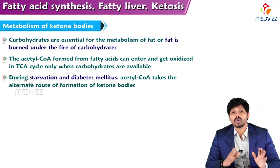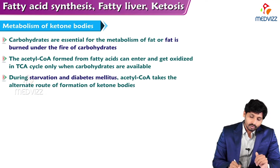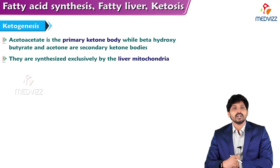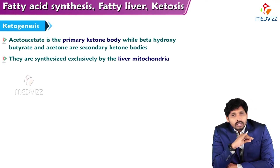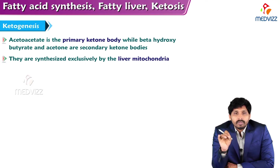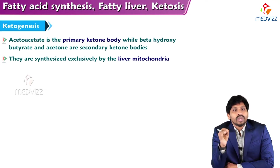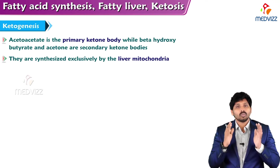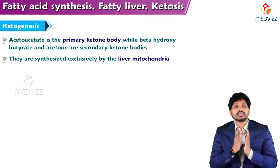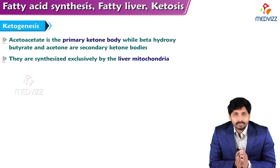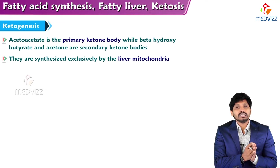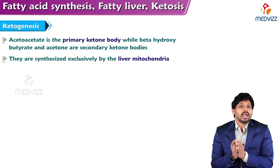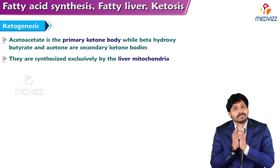During prolonged starvation and diabetes, acetyl CoA takes an alternative route for formation of ketone bodies — ketogenesis. The synthesis of ketone bodies happens exclusively in the liver; no other organ has such capability. There are three ketone bodies: acetone, acetoacetate, and beta-hydroxybutyrate. Acetone and acetoacetate are the true ketone bodies, while beta-hydroxybutyrate is not a true ketone body.